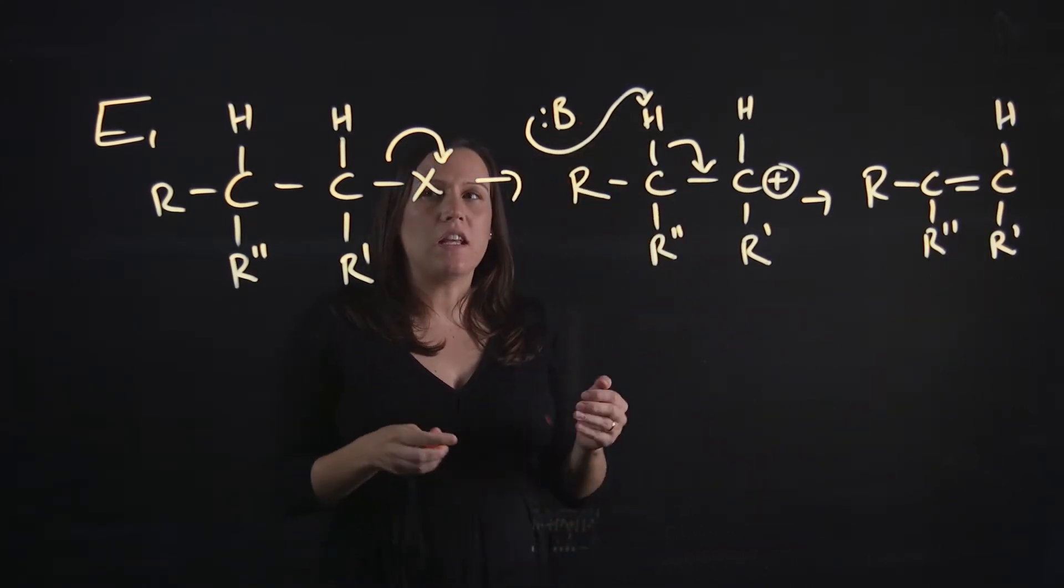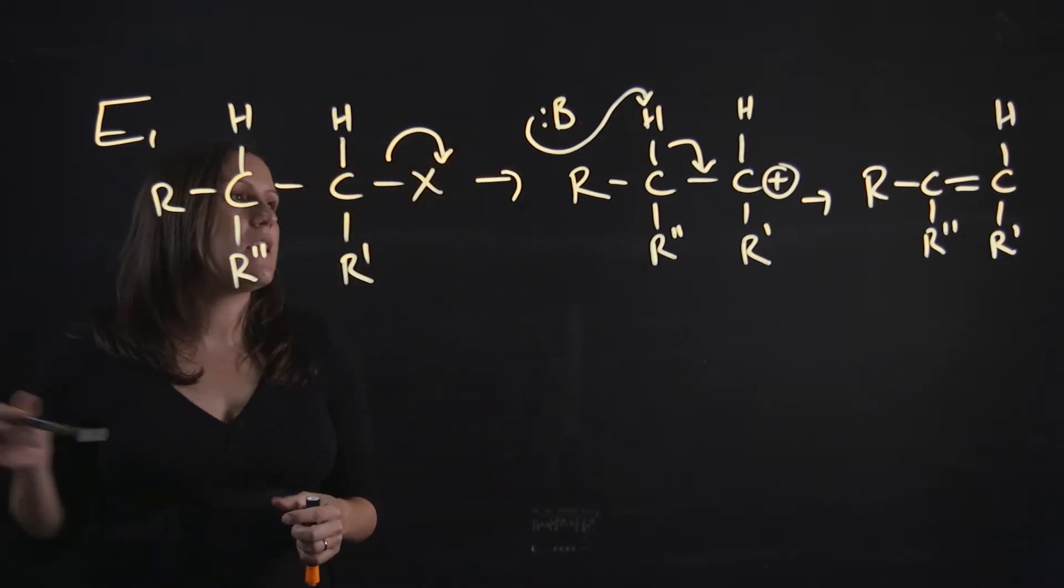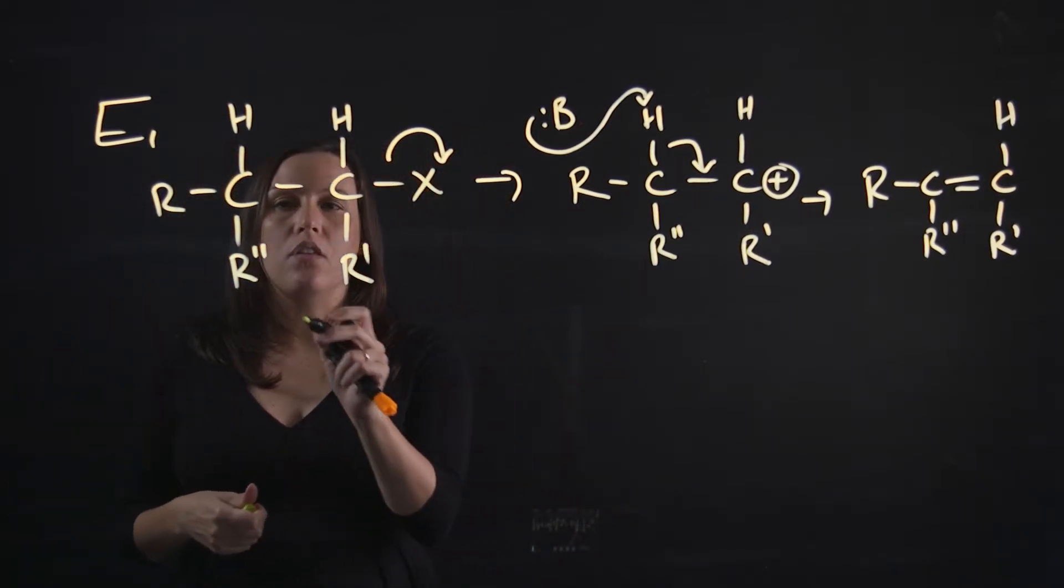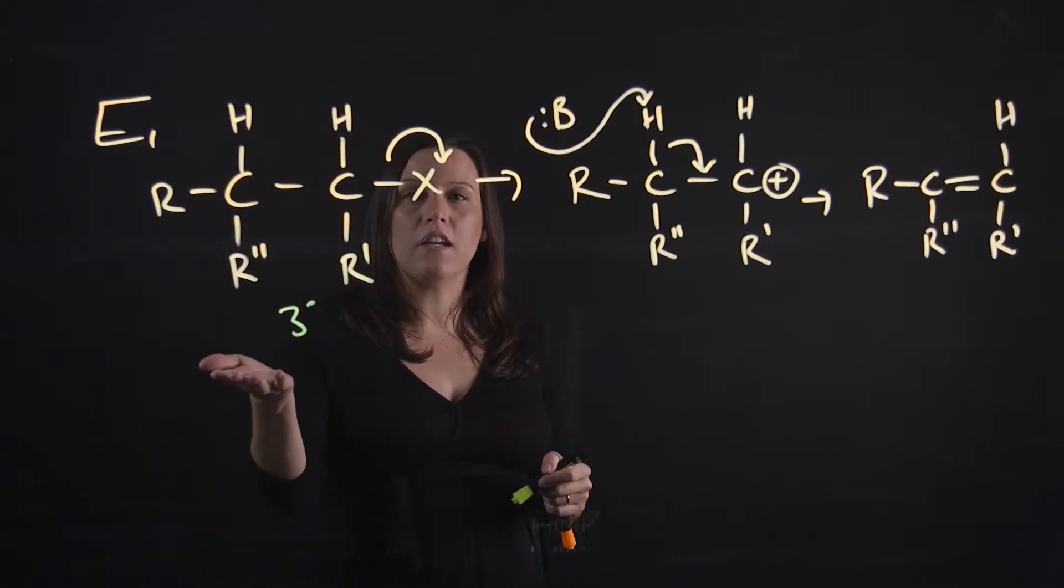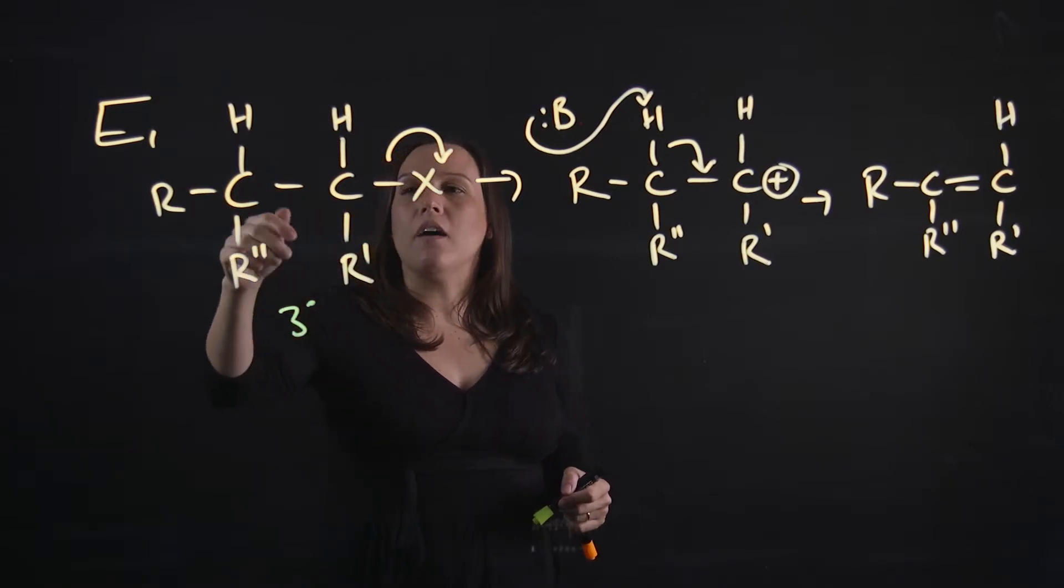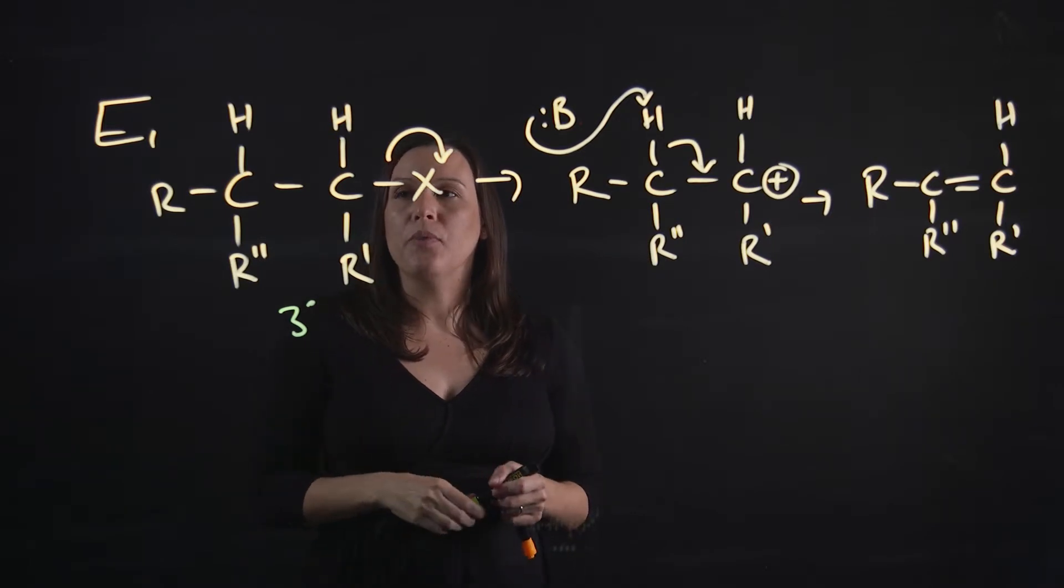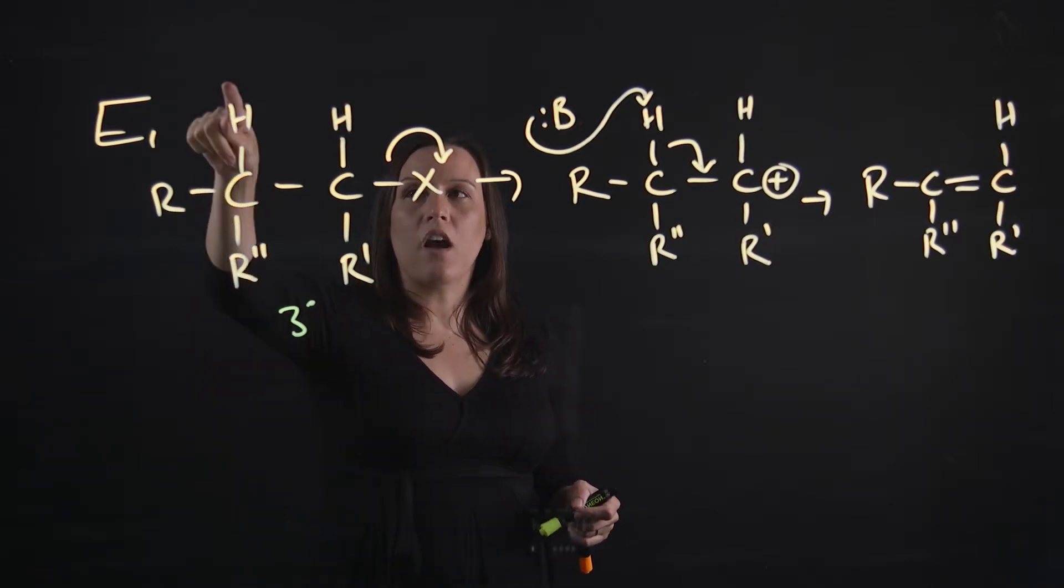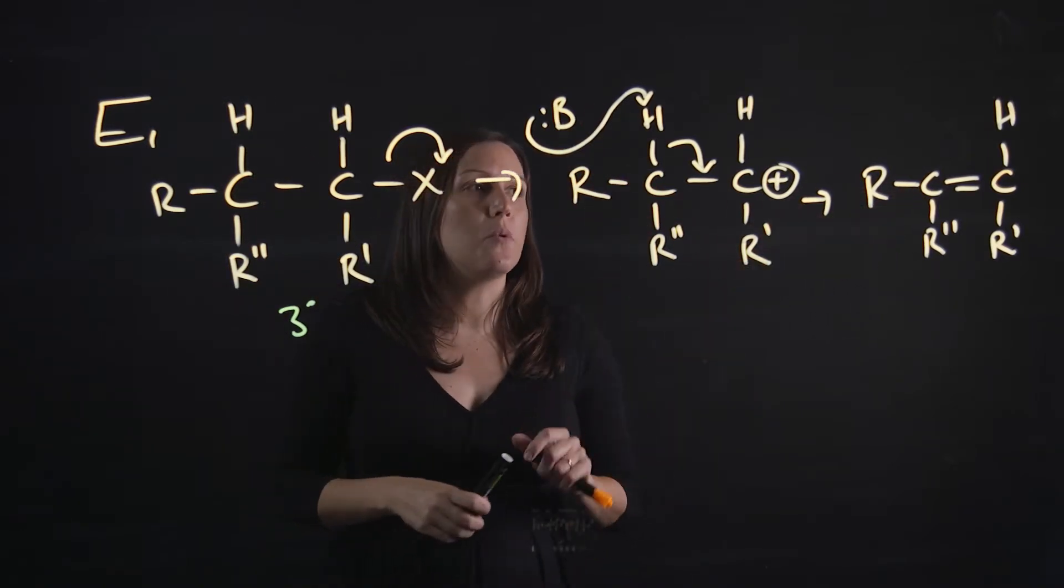The things you need to remember about the E1 reaction is the E1 reaction happens with tertiary starting reagents. We have to have a tertiary group preferentially. Secondary works fine too, but it doesn't occur with the primary ones as well. We need to have a beta hydrogen available for the base to remove to make the double bond.